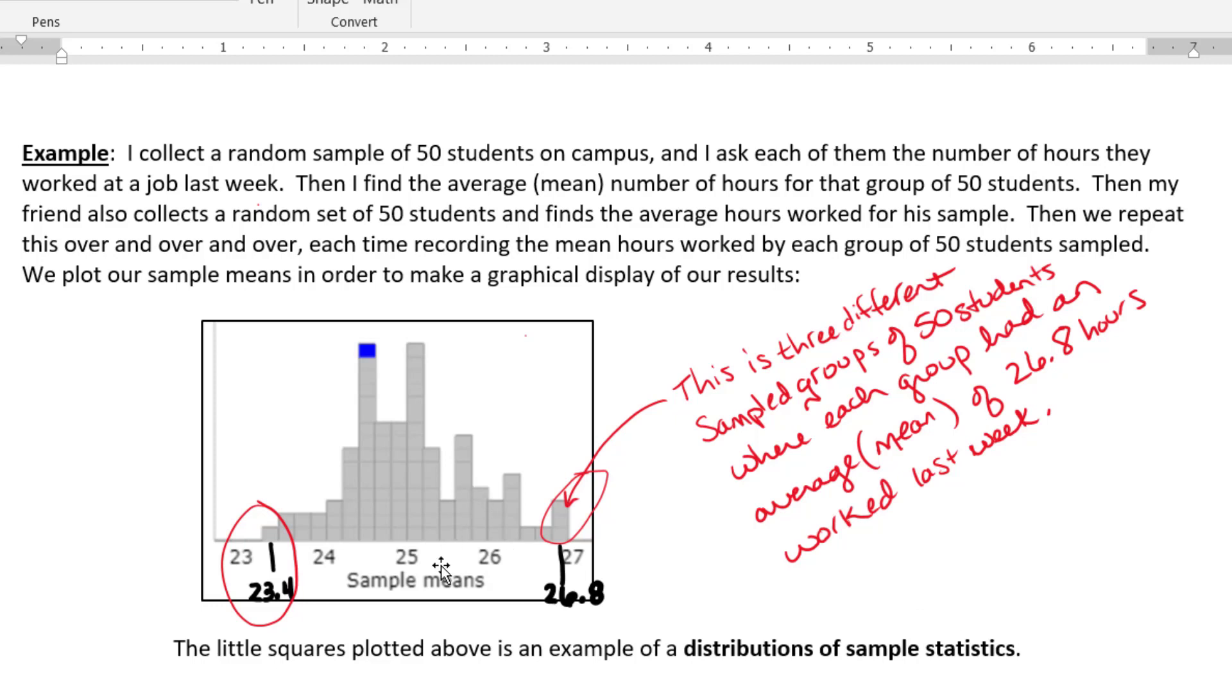So we can see there's many groups of 50 students that had an average number of work hours near 25 hours per week, and there's many fewer that had an average of 26.8 hours per week or as low as 23.4 hours per week.